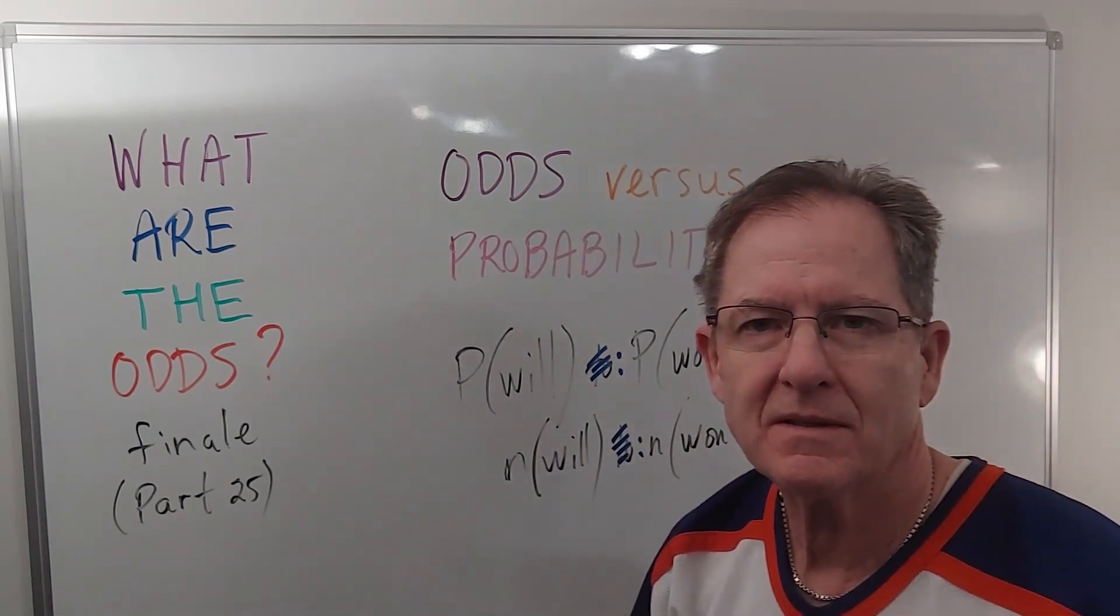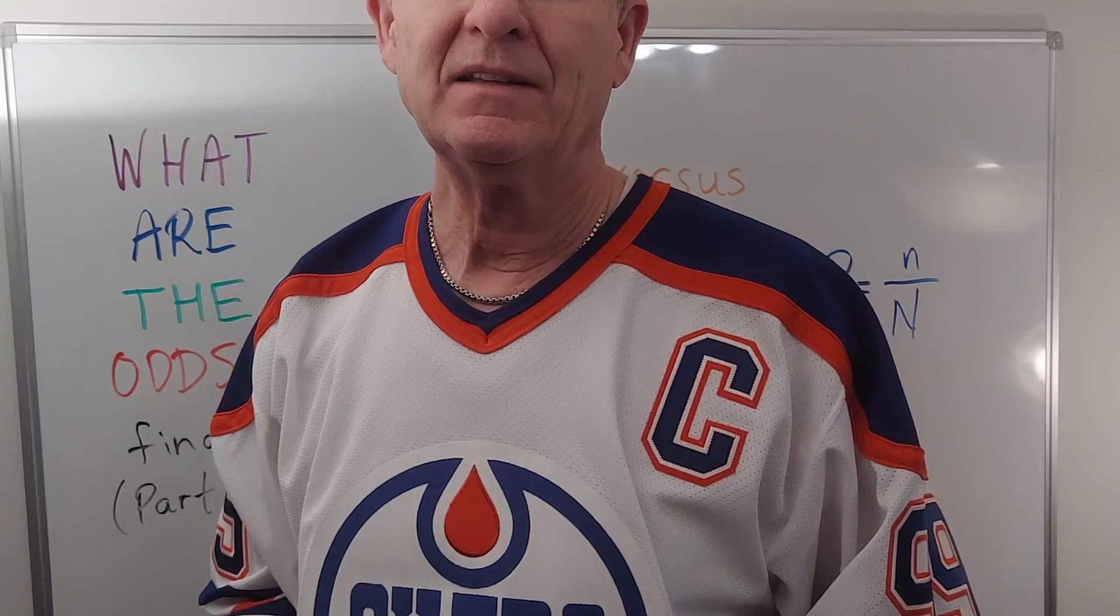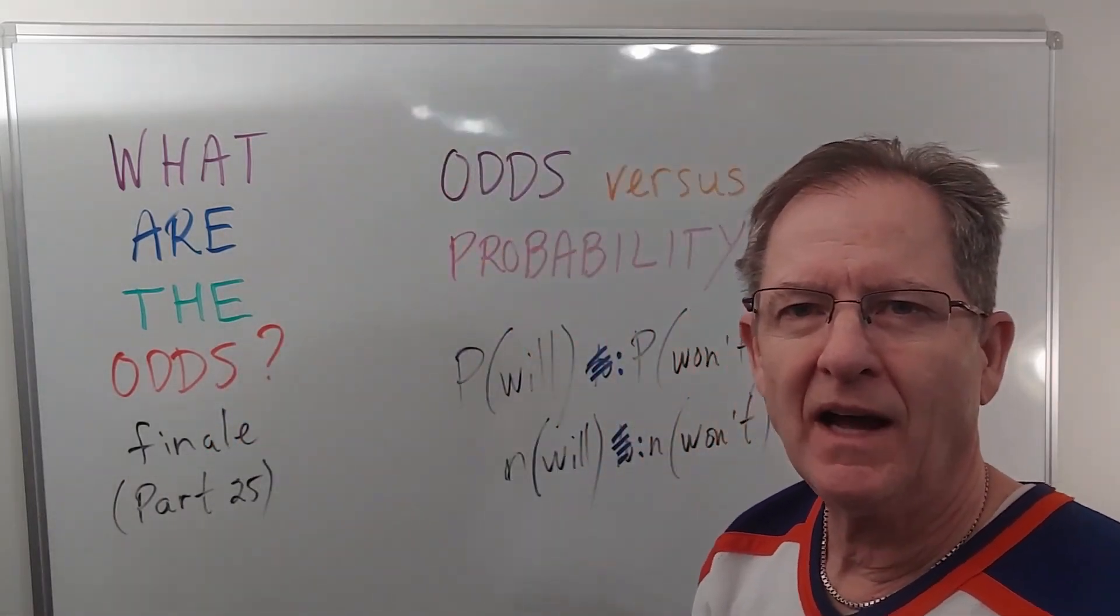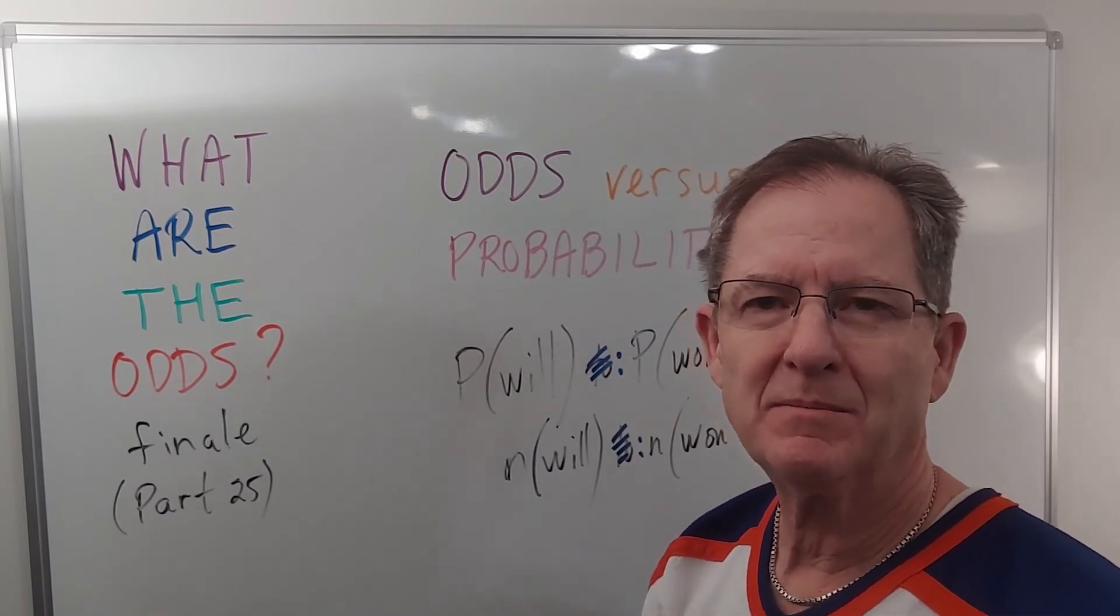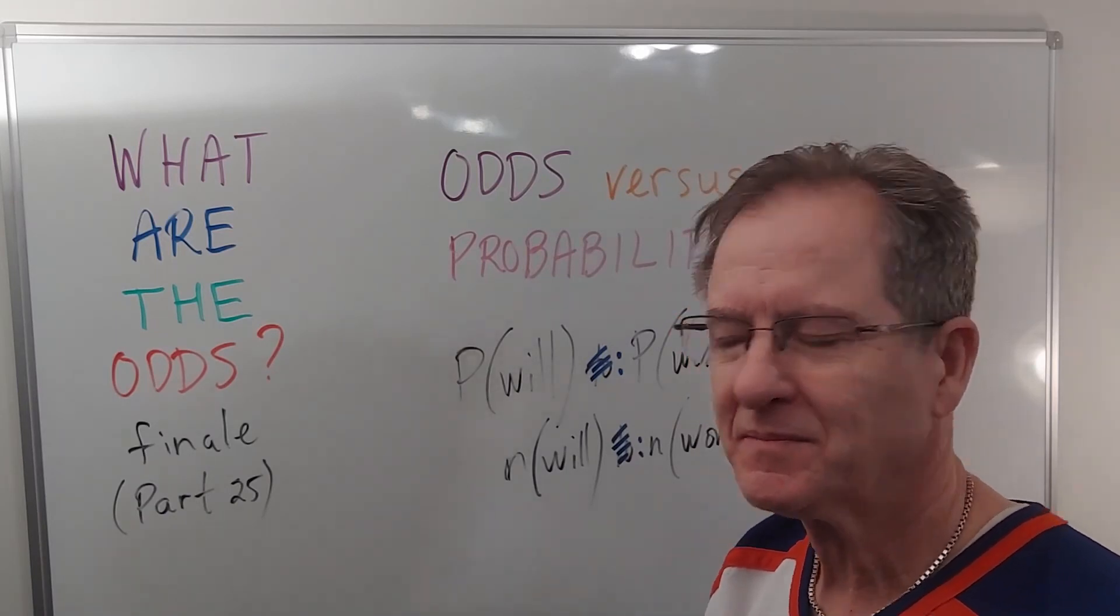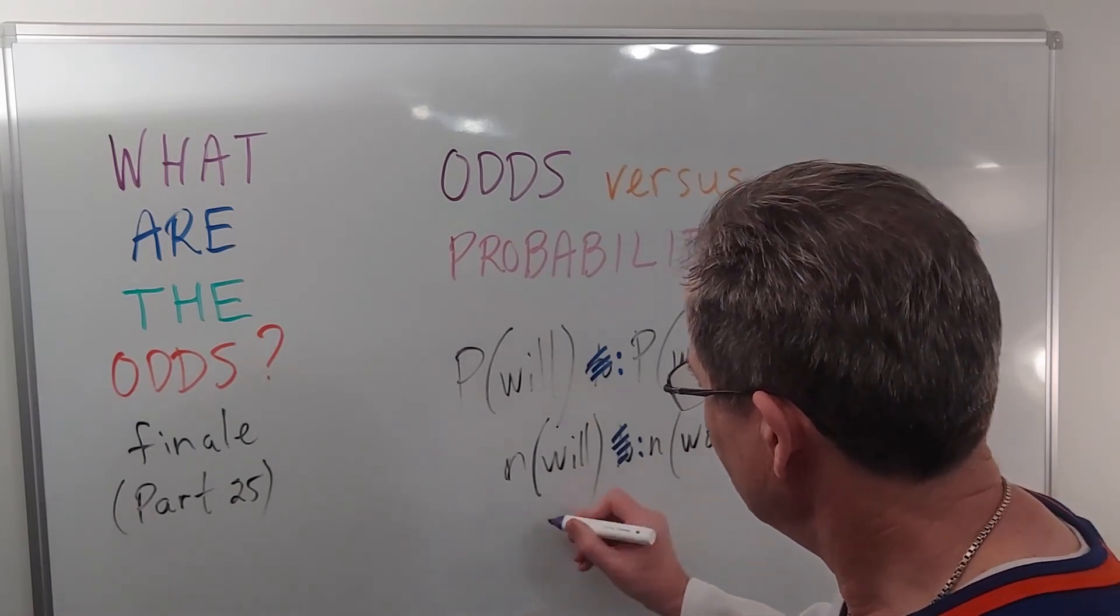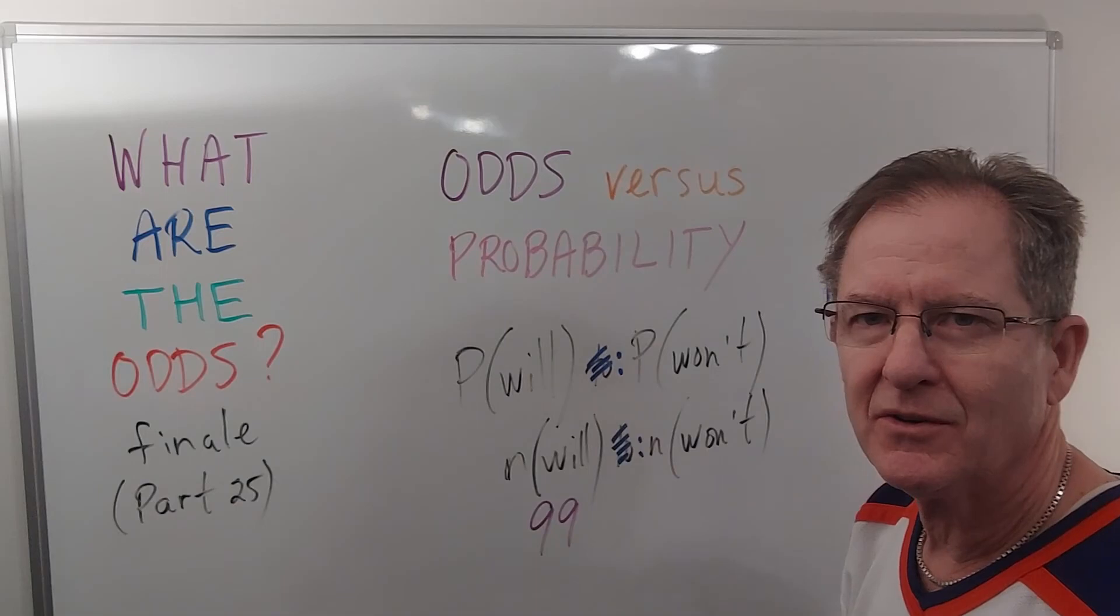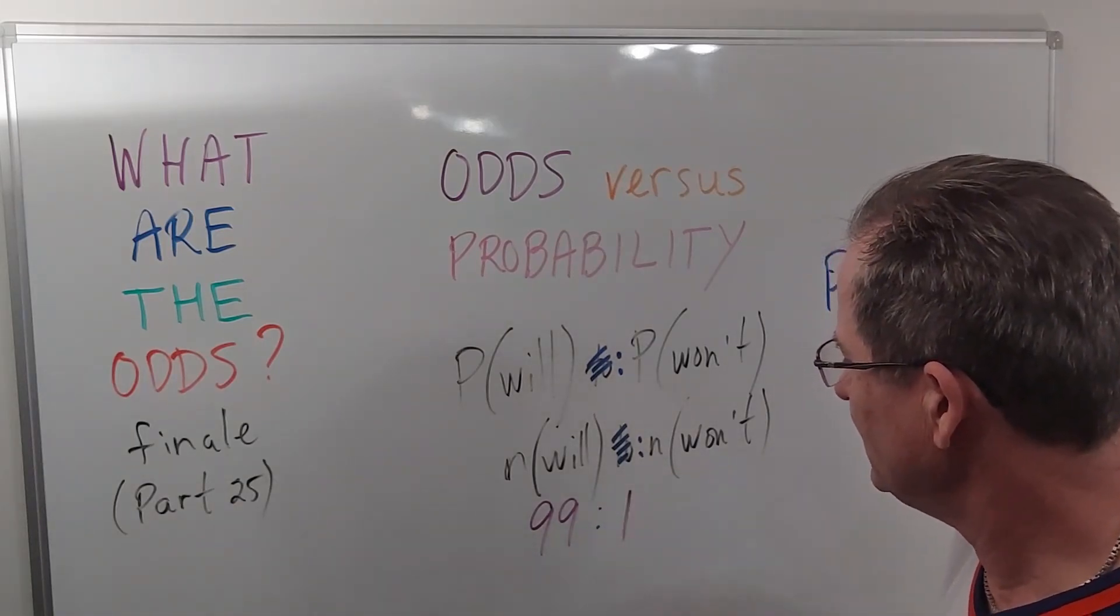So let's use number 99, Wayne Gretzky, as our example. Let's say Canadians were asked who the most famous hockey player has been up until the present day. I would say there's a good chance that 99 out of 100 would say that. So we would say 99 to 1.